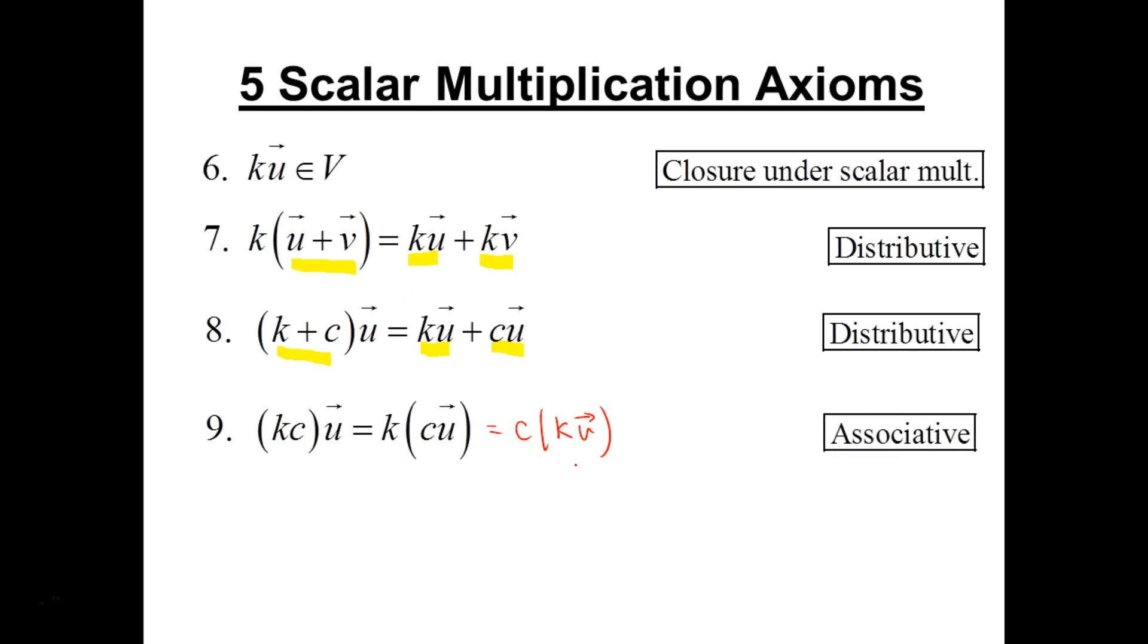And then finally, the last property is that we need a number. One of the scalars must exist that when we scale the vector, it doesn't change it. We get the vector back. And this is called a multiplicative identity, a scalar identity.